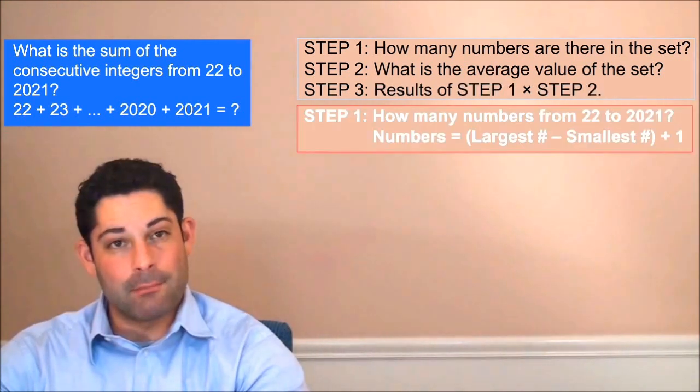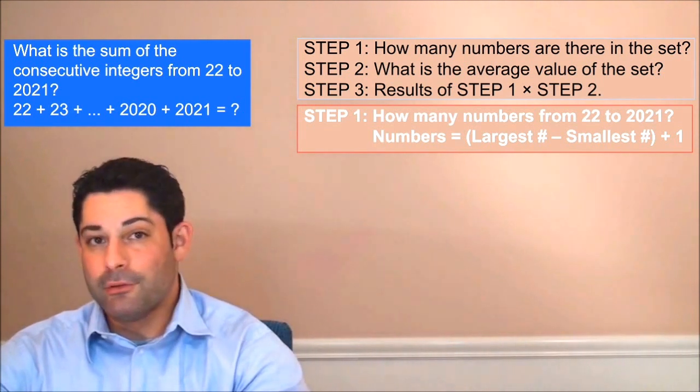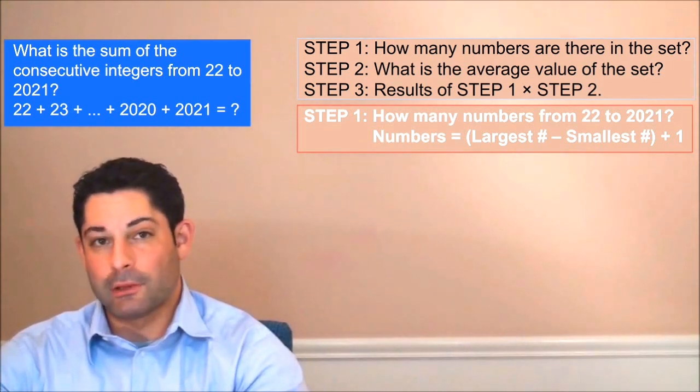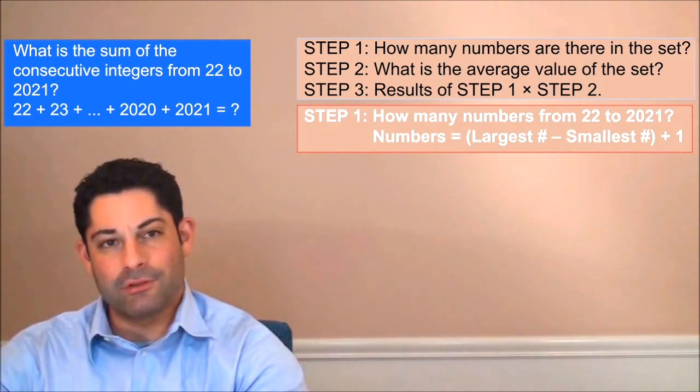In our first step we'll determine the number of integers in this consecutive set. The way to do this is to find the difference between the largest and smallest members of the set and then to simply add one to this difference.